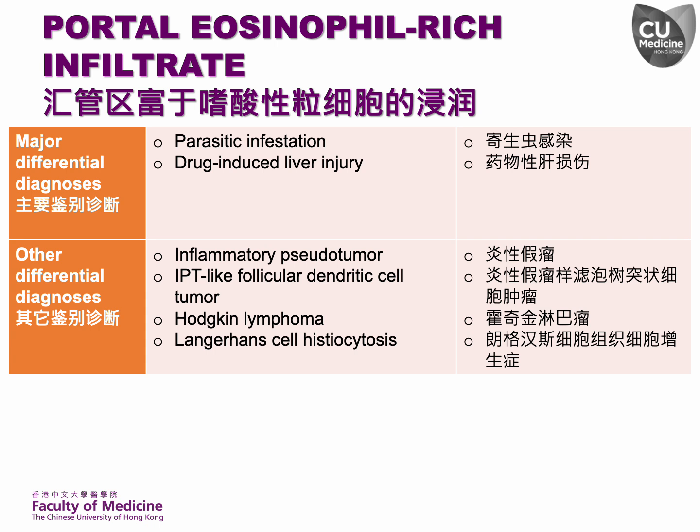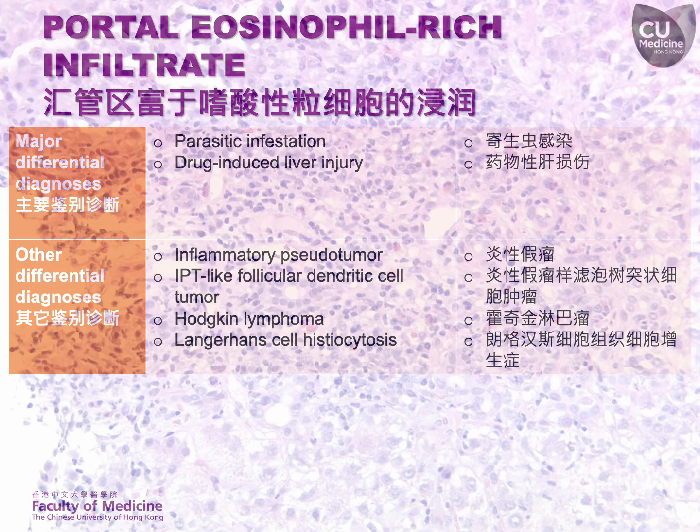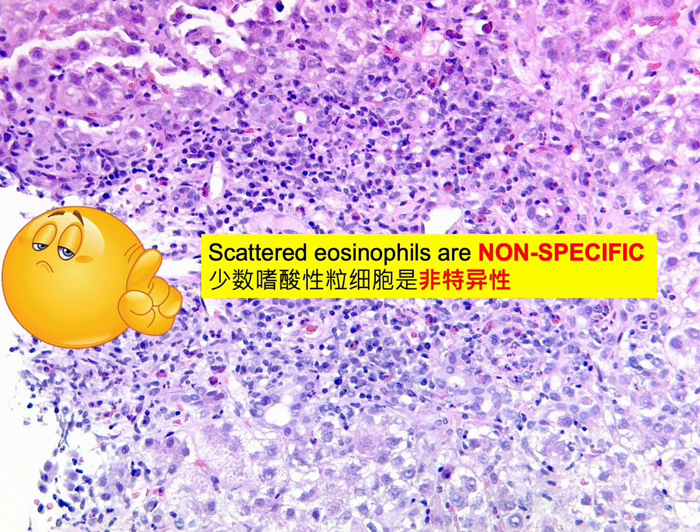Parasitic infestation and drug-induced liver injury should be considered when eosinophil-rich portal inflammation is observed. Other less common differential diagnoses include inflammatory pseudotumor, IPT-like follicular dendritic cell tumor, Hodgkin lymphoma, and Langerhans cell histiocytosis. However, the presence of a few scattered eosinophils in the portal tract is quite nonspecific and commonly observed in a variety of liver diseases.